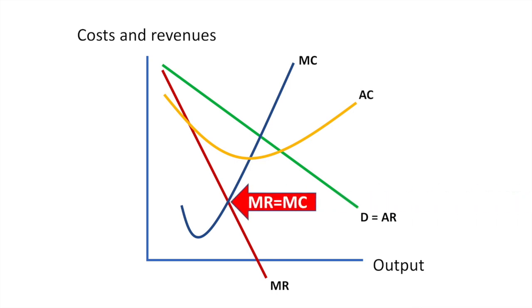Where profit maximization is found where marginal revenue equals marginal cost, sales revenue maximization occurs where total revenue is at its peak or where marginal revenue is equal to zero.